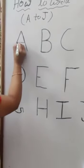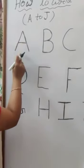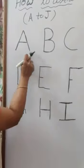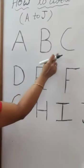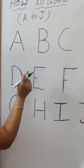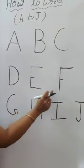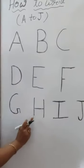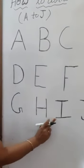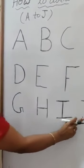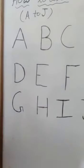Starting se: A, B, C, D, E, F, G, H, I, J. Okay.